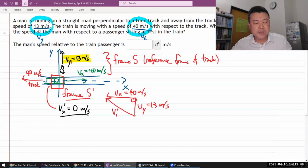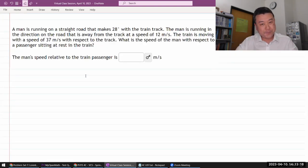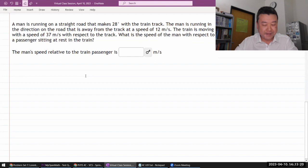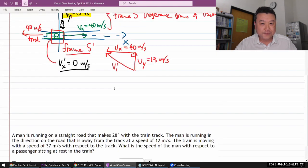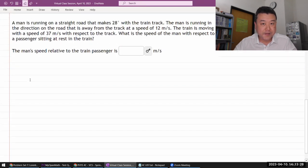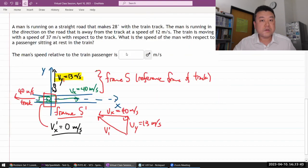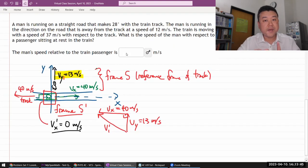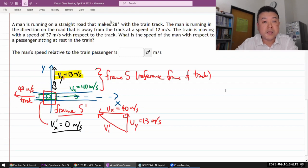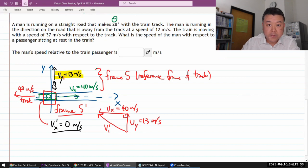So, let me look ahead to the next question that I was going to do and just to see if they are both non-relativistic. So, with this question, I think I can use most of the information here. So, let me just copy it over and I'll just change them to make it fit this new situation. So, what's changing is that the man is now running on a straight road that's making some angle theta. Let's call this theta with the train track.